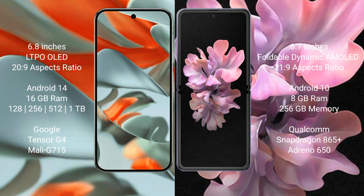Google Pixel 9 Pro XL runs on the Android 14 operating system. Samsung Galaxy Z Flip runs on the Android 14 operating system. Google Pixel 9 Pro XL comes with 16GB RAM and 128GB, 256GB, 512GB, or 1TB internal storage.